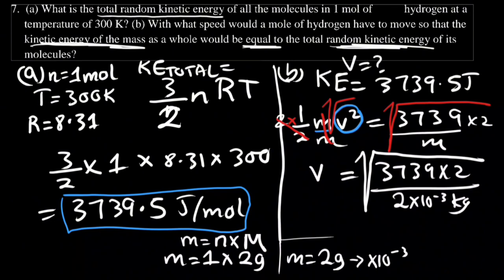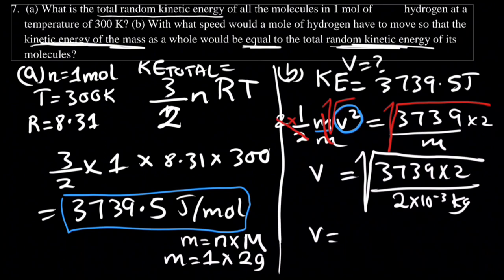Calculating v = √(2 × 3739.5 / (2 × 10⁻³)) gives a speed of 1933.6 meters per second.